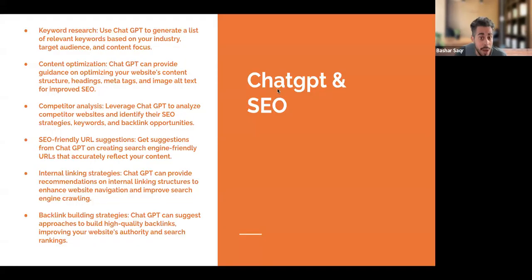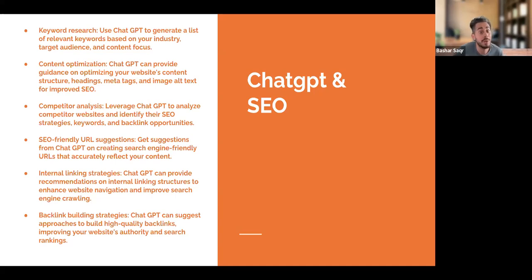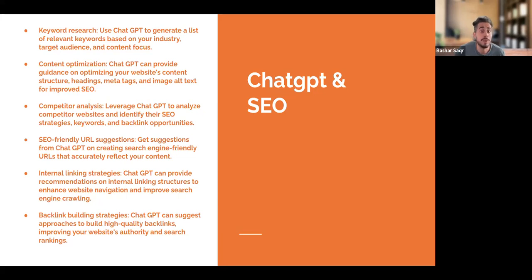Speaking of SEO, how might you utilize ChatGPT for SEO? One of the most difficult components is on-page SEO, which is keyword research. We can use ChatGPT to generate a list of relevant keywords for our industry, target audience, and content focus. Also for content optimization, it can provide guidance on optimizing our website's content structure, headings, meta tags, and alt tags — all important factors for SEO.